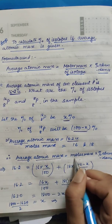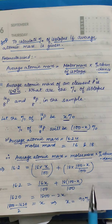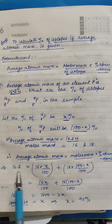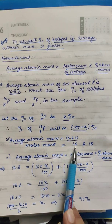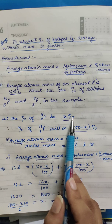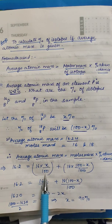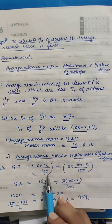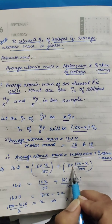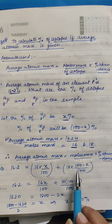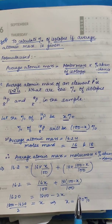Now I will apply the formula: average atomic mass equals molar mass multiplied by percentage abundance. All data is ready — I simply multiply, add, and find x. So: 16.2 = 16 × (x/100) + 18 × ((100 − x)/100). We divide by 100 because we are using percentage. The first molar mass is 16, with abundance x/100; the second molar mass is 18, with abundance (100 − x)/100.